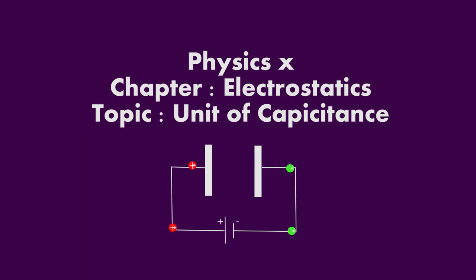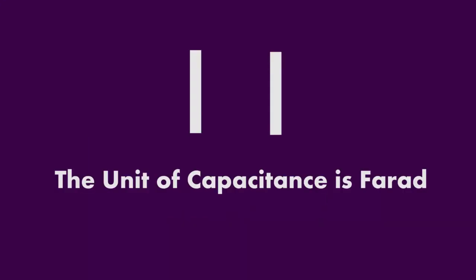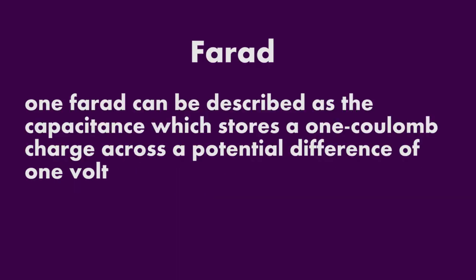The unit of capacitance is farad. One farad can be described as that capacitance which stores a one-coulomb charge across a potential difference of one volt.